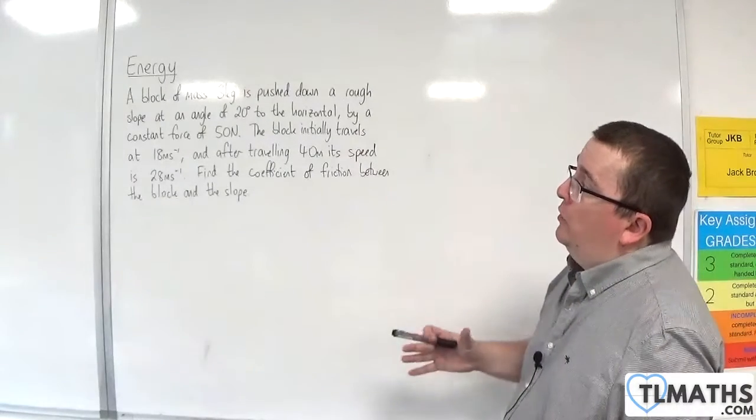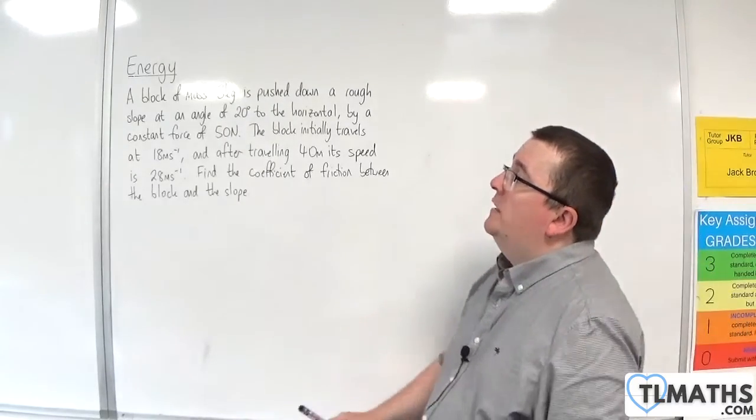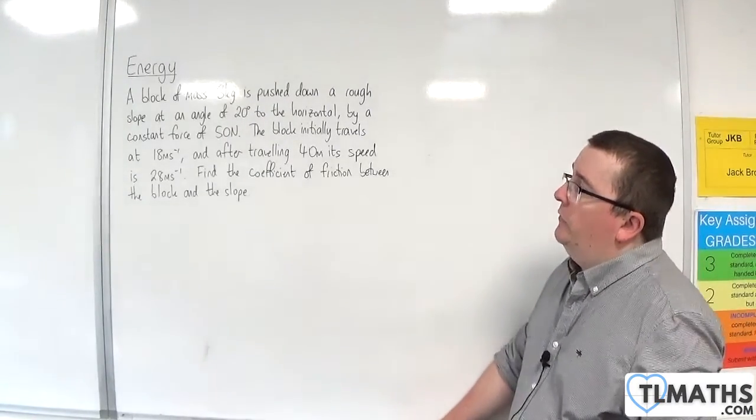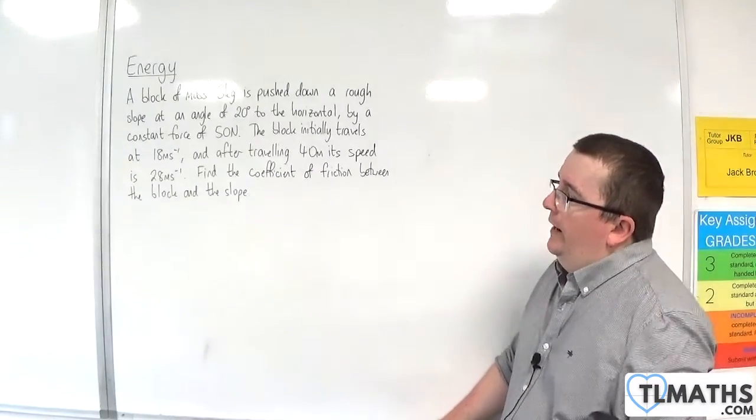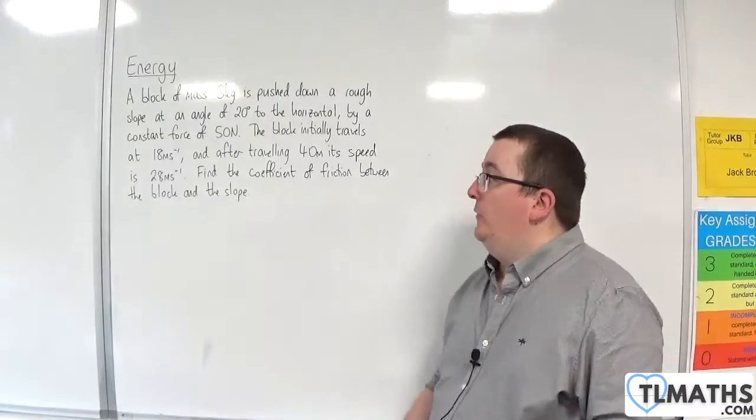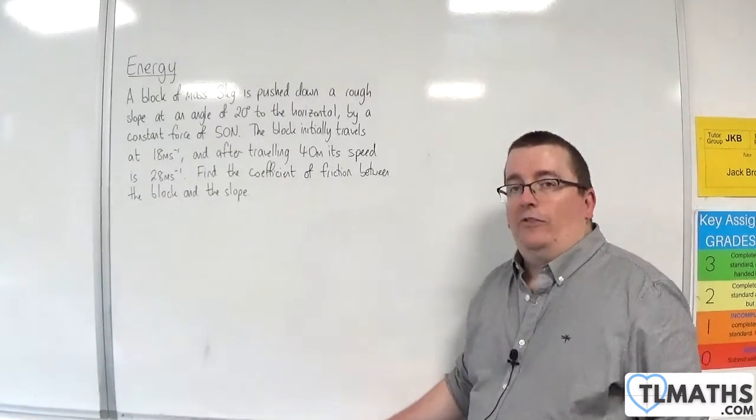In this problem, we have a block of mass 3 kilos being pushed down a rough slope at an angle of 20 degrees to the horizontal by a constant force of 50 newtons. The block initially travels at 18 metres per second, and after travelling 40 metres, its speed is 28 metres per second. Find the coefficient of friction between the block and the slope.